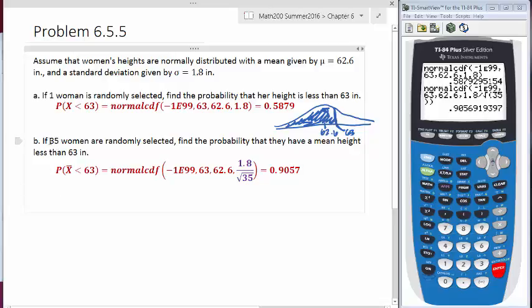But if you have a sample, a sample, a fixed sample size n, and you're looking for the probability that not just their height but their mean height, the mean of that particular sample, then you're looking at the central limit theorem.